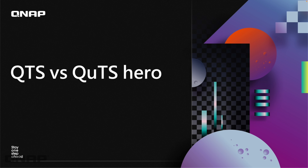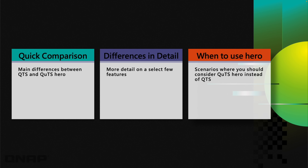We'll jump straight in with the agenda. Here we've got a quick comparison table showing the different main features between the two — there are of course more, but I've picked the main ones. I'll go through some of those in a bit more detail, and at the end there's a page with bullet points explaining when you should definitely use QUTS Hero, or if you don't meet any of those criteria, QTS might be enough. Some factors are very decisive — if you definitely meet certain requirements, QUTS Hero is pretty much the only choice.